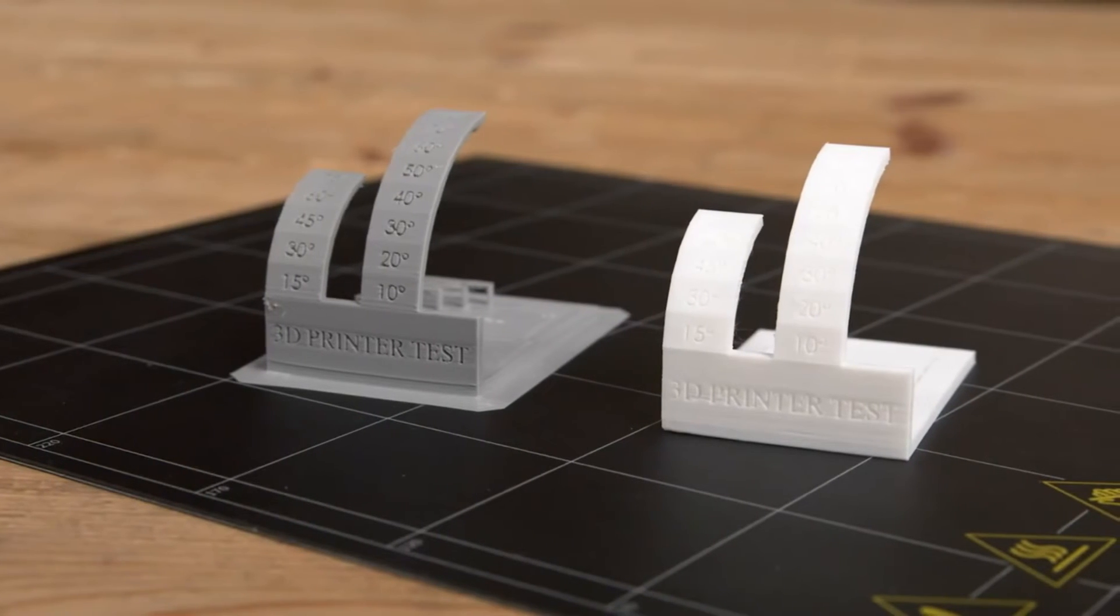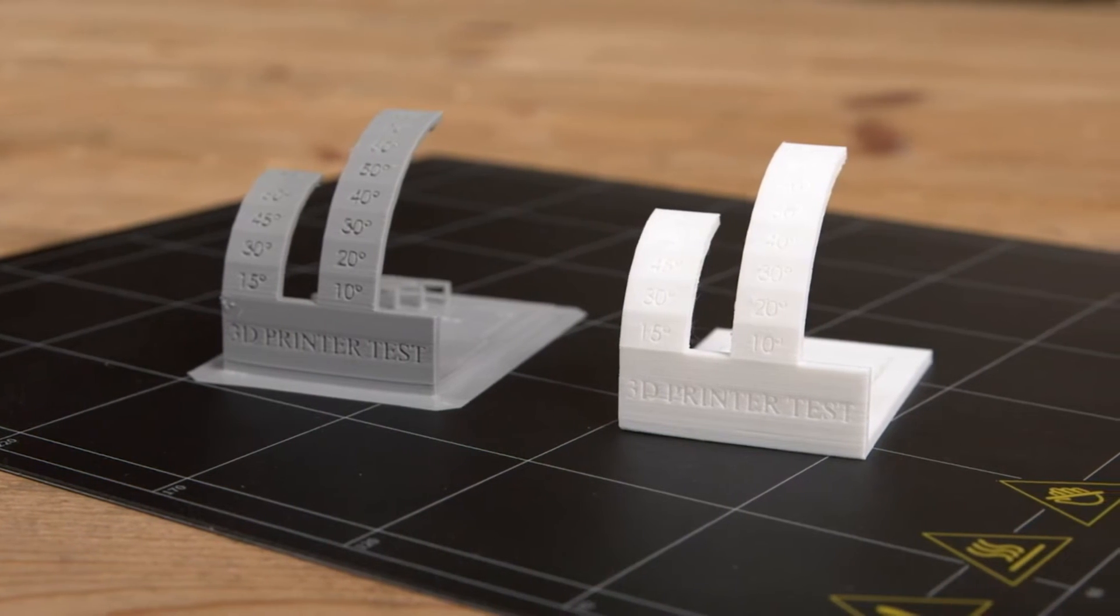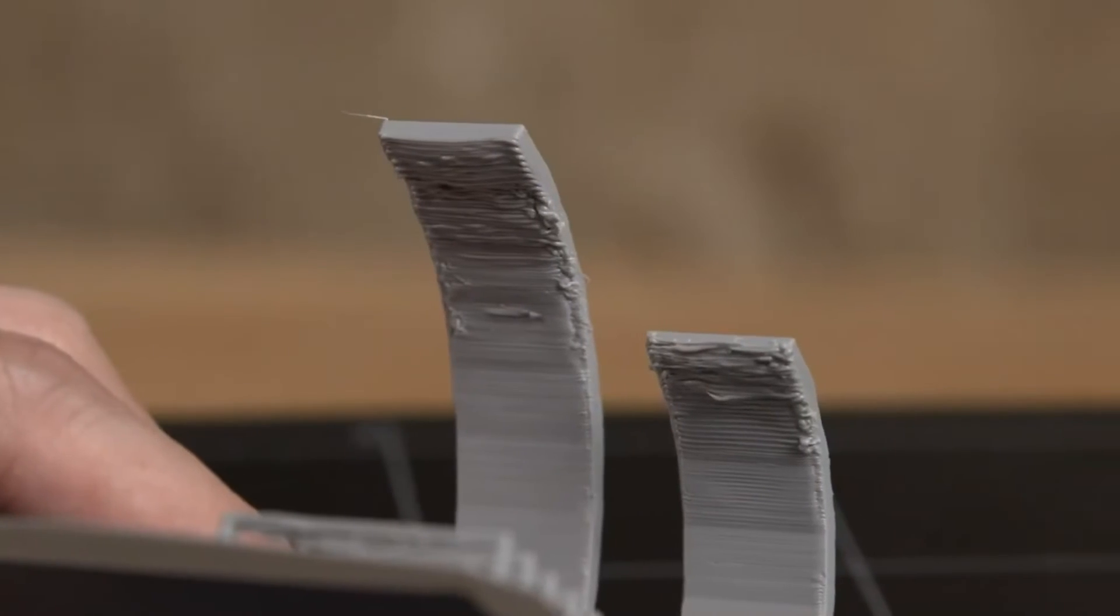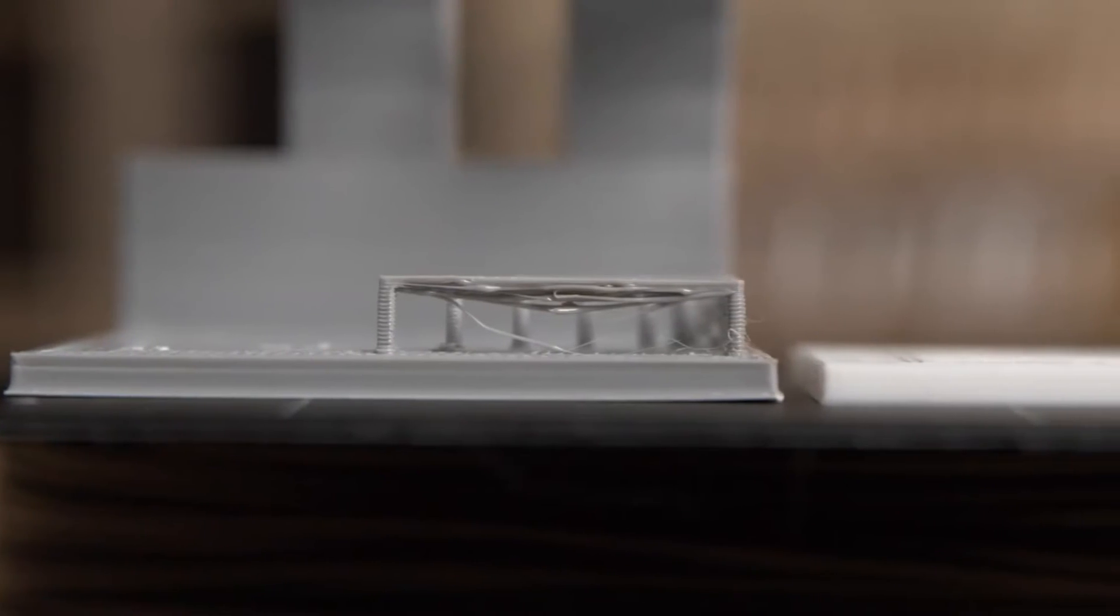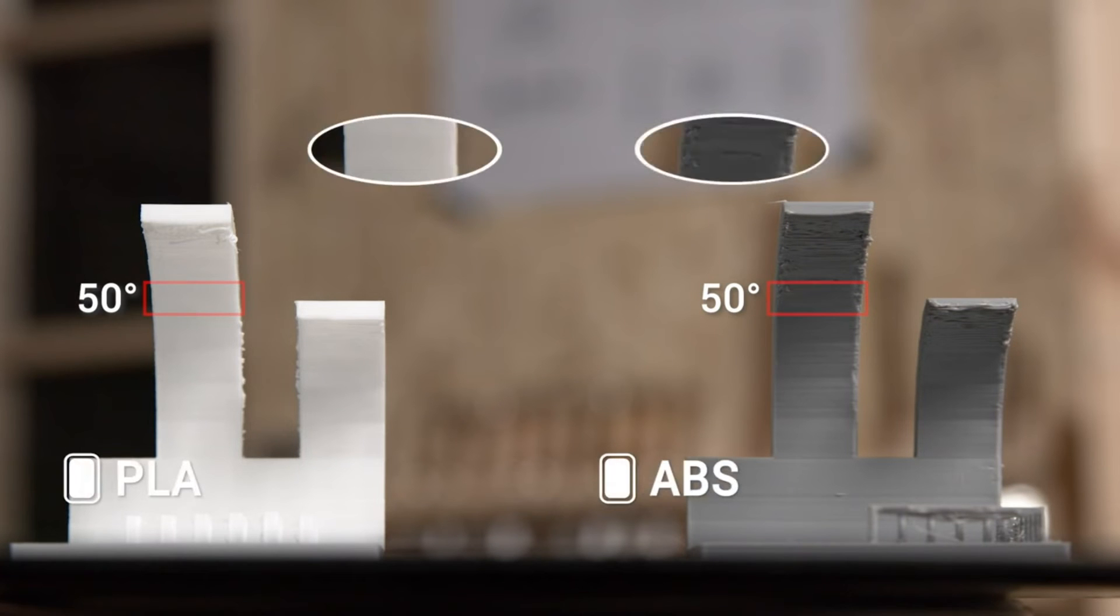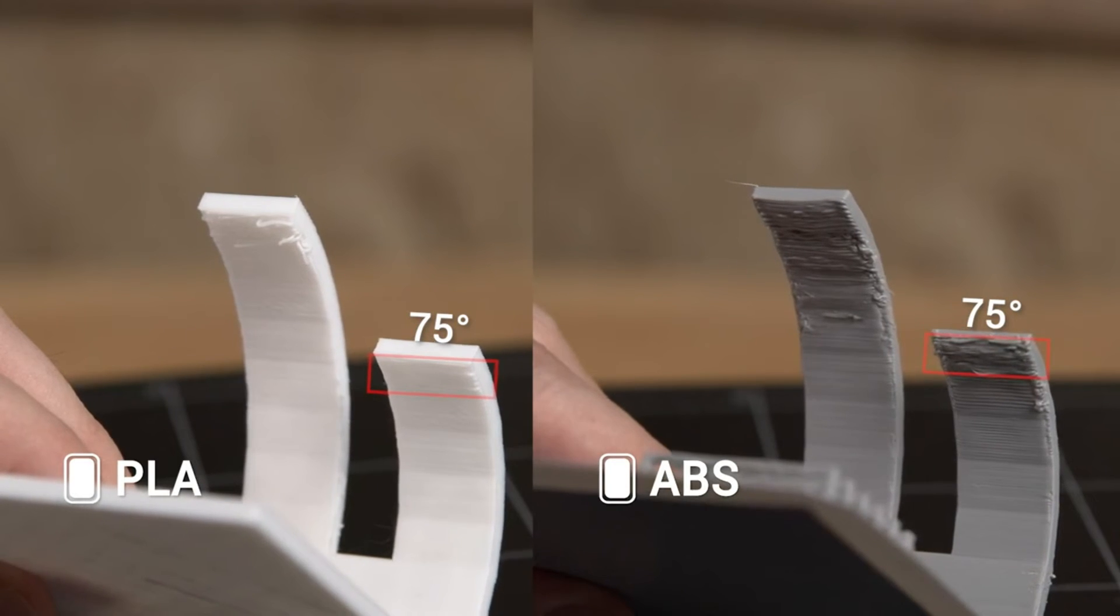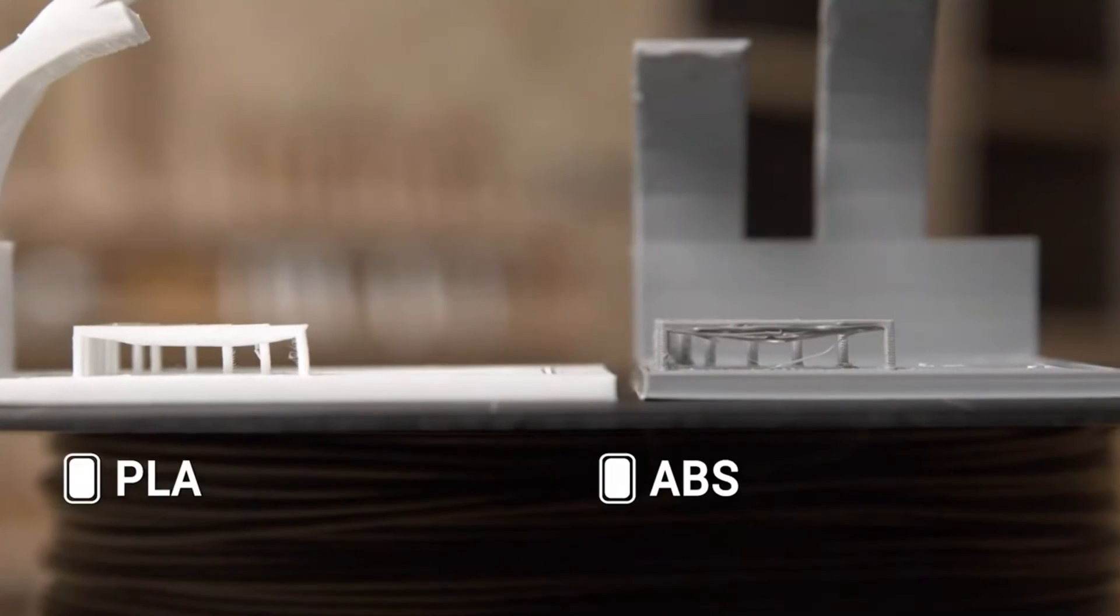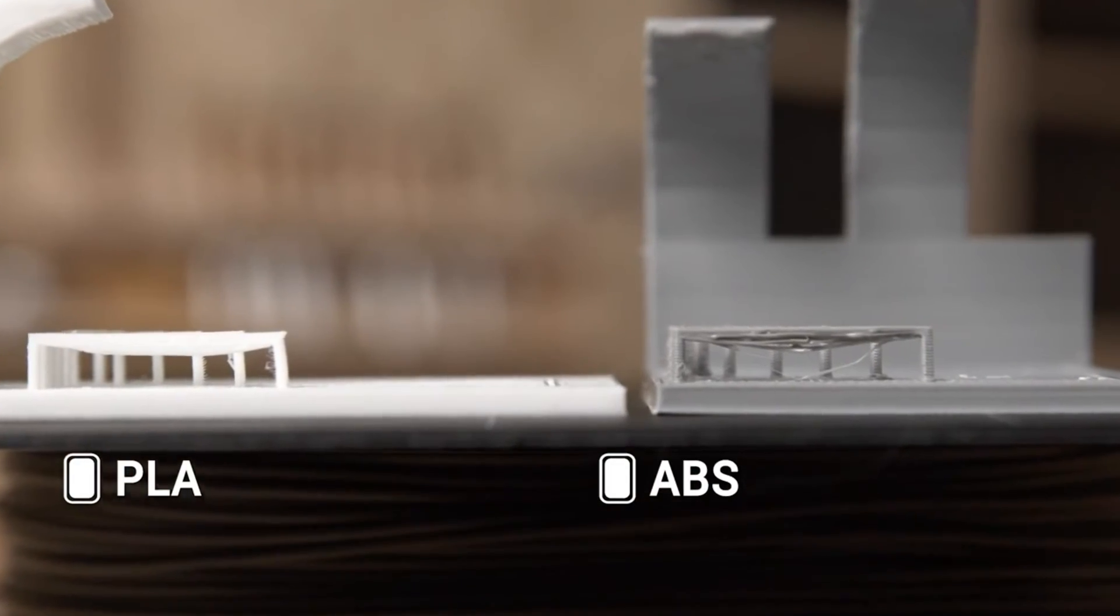The other problem with ABS printing is its tolerance to vertical overhang and bridging structure. ABS is more likely to curl and sag as the overhang angle or bridge length increases. At 50 degrees, PLA looks alright, while ABS has some flaws at the edge. When it reaches 75 degrees, both of them have obvious saggings, but PLA is apparently better. And at the same length, ABS bridges have more saggings or breaking-offs than PLA.